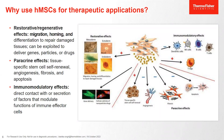Now that we have defined what MSCs are, let's understand why human mesenchymal stromal cells are used for therapeutic applications. Human mesenchymal stromal cells have regenerative properties. They home to the site of damaged tissue and facilitate its repair. They have a paracrine signaling effect to stimulate tissue-specific stem cell renewal, angiogenesis, fibrosis, and apoptosis.